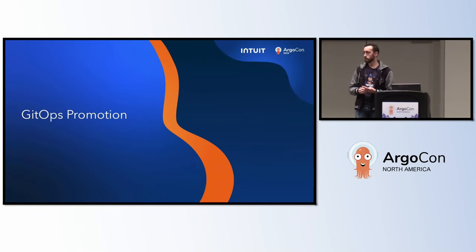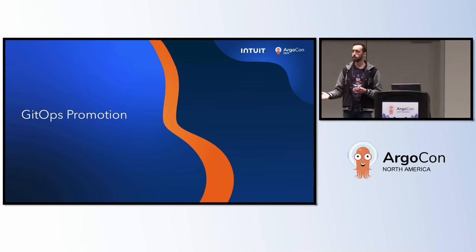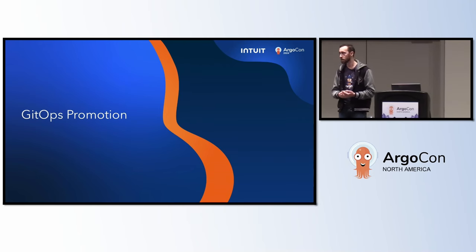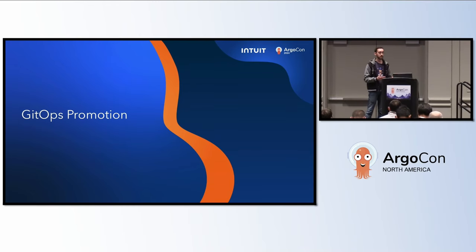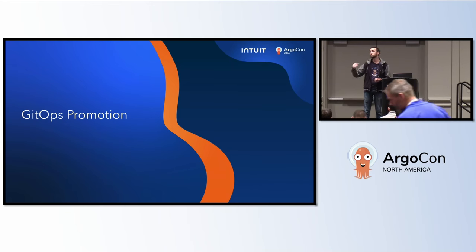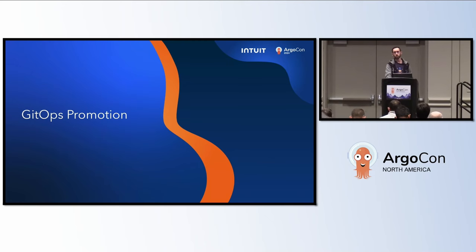GitOps promotion. Before we get into the GitOps piece of it, I'll quickly explain why we do environment promotion at all. It boils down to the fact that a developer's laptop is not a sufficient testing ground before you ship to prod — it's just not similar enough to cloud infrastructure to be a trustworthy test. So you spin up a dev environment and a staging environment alongside your prod environment using all the same cloud infrastructure, and then you do your promotions.